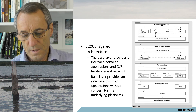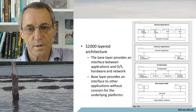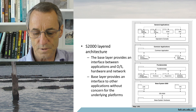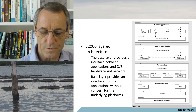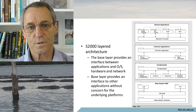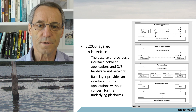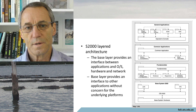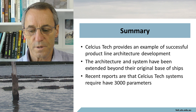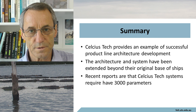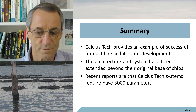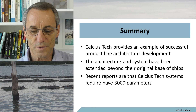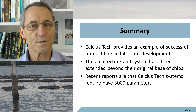The Ship System 2000 layered architecture has a base layer that provides the interface between the applications, the operating system, hardware, and network — visible right at the bottom of the diagram. The base layer provides an interface with other applications without concern for the underlying platform. In summary, Celsius Tech provides an example of a successful product line architecture development. The architecture and system have been extended beyond the original base of ships to airfields, and the system requires about 3,000 parameters — not a trivial system.